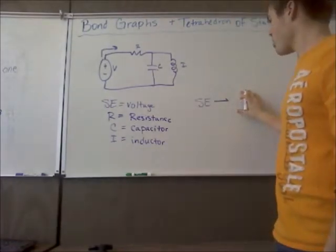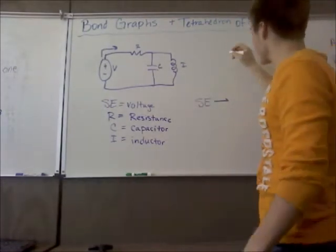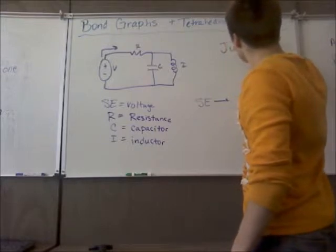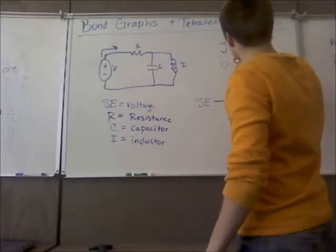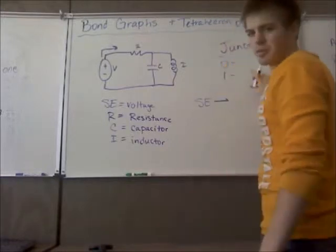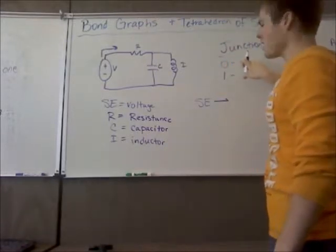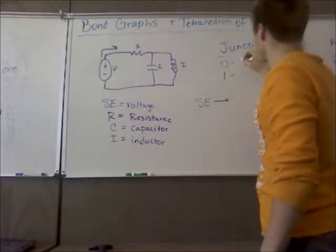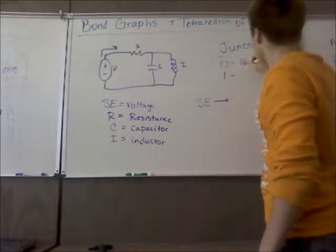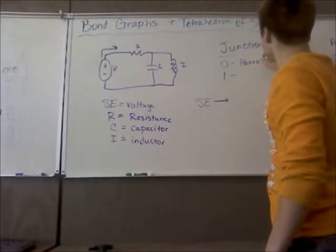And a junction can either be a zero or a one. Those are your two kinds of junctions. So for an electrical system, a zero junction is going to be any junction that's in parallel with another, like two things in parallel.